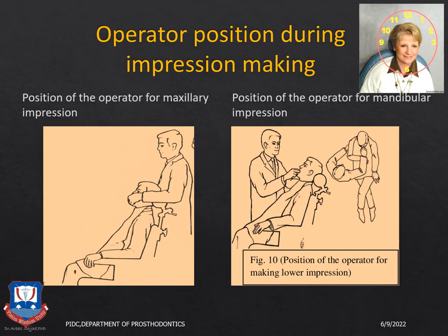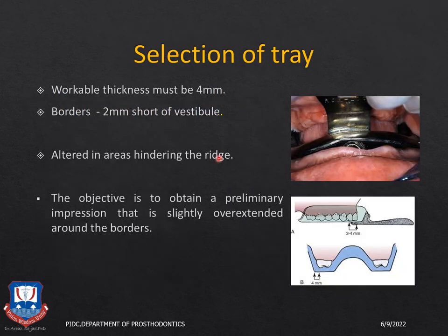Regarding operator position: for maxillary impressions, the operator stands at the 11 o'clock position — just behind the patient on the right side. For mandibular impressions, the operator stands in front of the patient at the 7 o'clock position. These positions are reversed for left-handed operators. When selecting stock trays, they should cover the entire denture basal seat area from the labial frenum to the hamular notch, with 2 mm of space between denture borders and the vestibular depth, and at least 4 mm of space for the impression material.